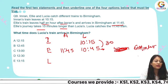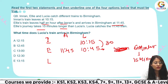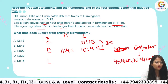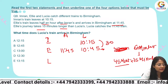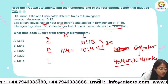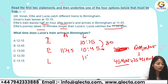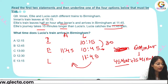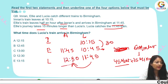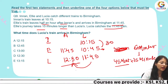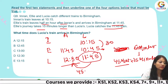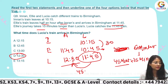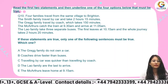Lucia takes 15 minutes less than Ellie, so 45 minutes total. Lucia catches the train at 11:45, and if she takes 45 minutes, she will arrive at 12:30. Lucia will arrive at Birmingham at 12:30.